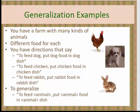Now, what is generalization? Generalization is when you see more than one instance or domain and can generalize something from all of it. So I have here different animals — chickens, a dog, a bunny. I might be very specific and think: to feed the chicken, you put the chicken food in the chicken dish; to feed the dog, you put the dog food in the dog dish; to feed the bunny, you put the bunny food in the bunny dish. Then you might think — well, it's really the same regardless of the type of animal.